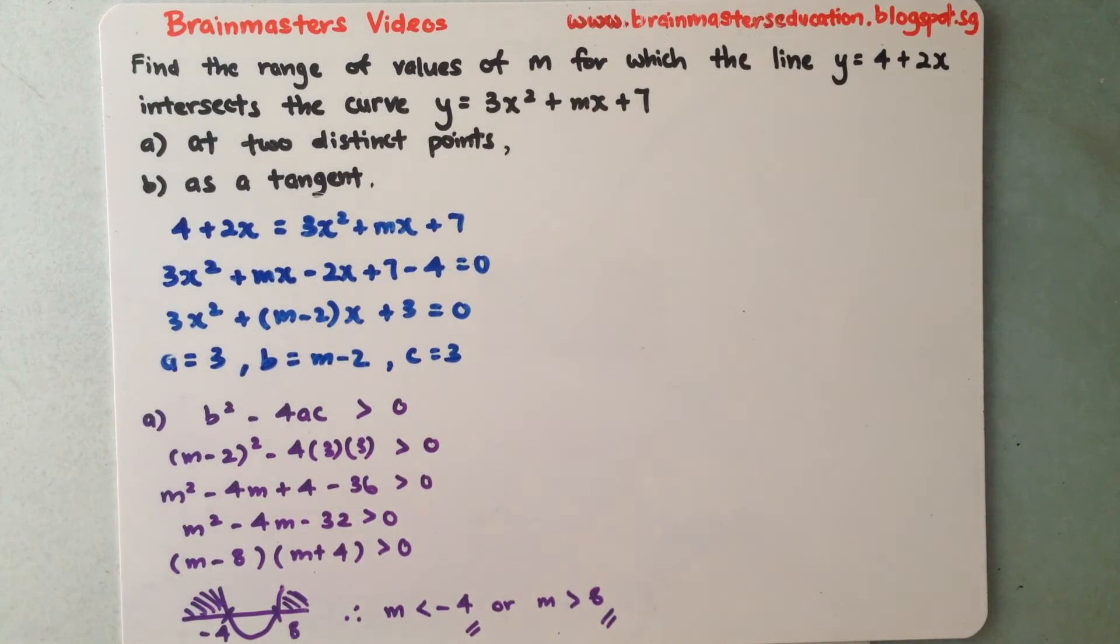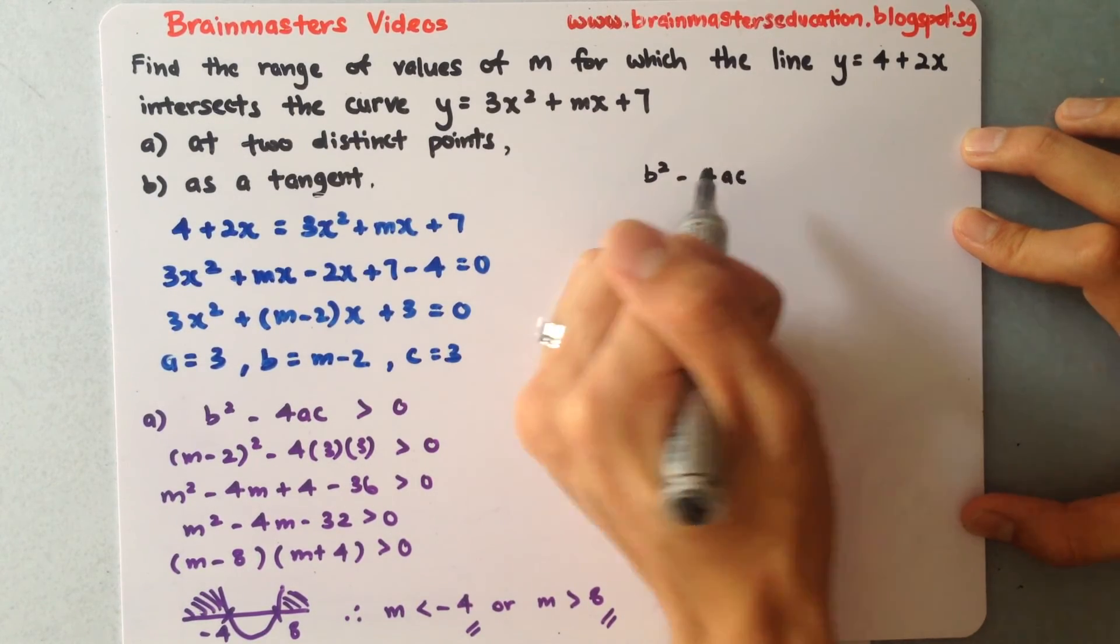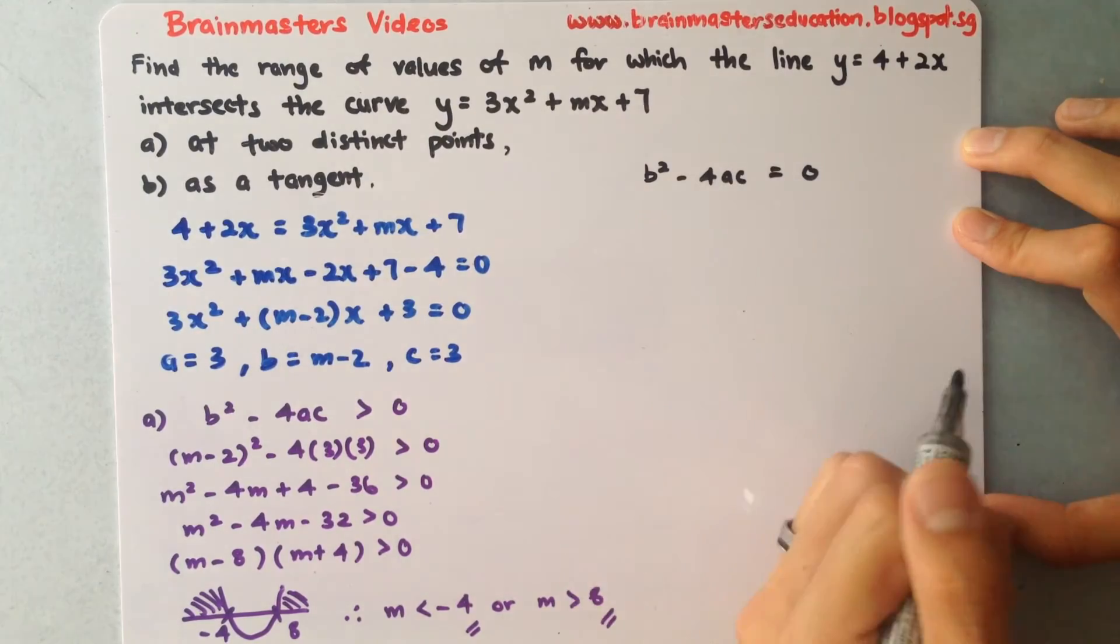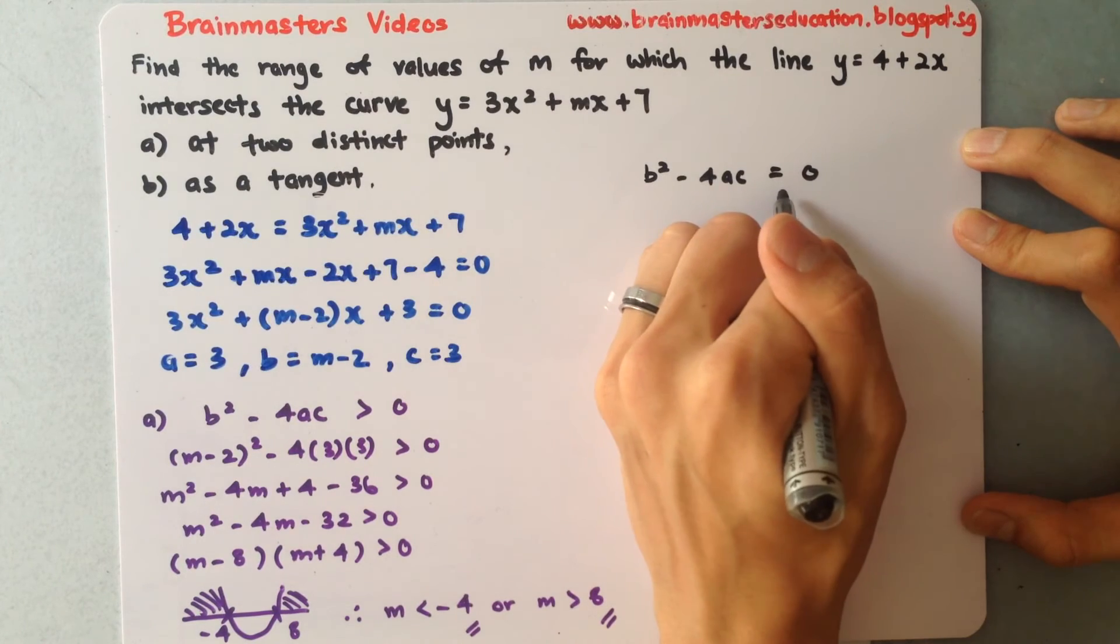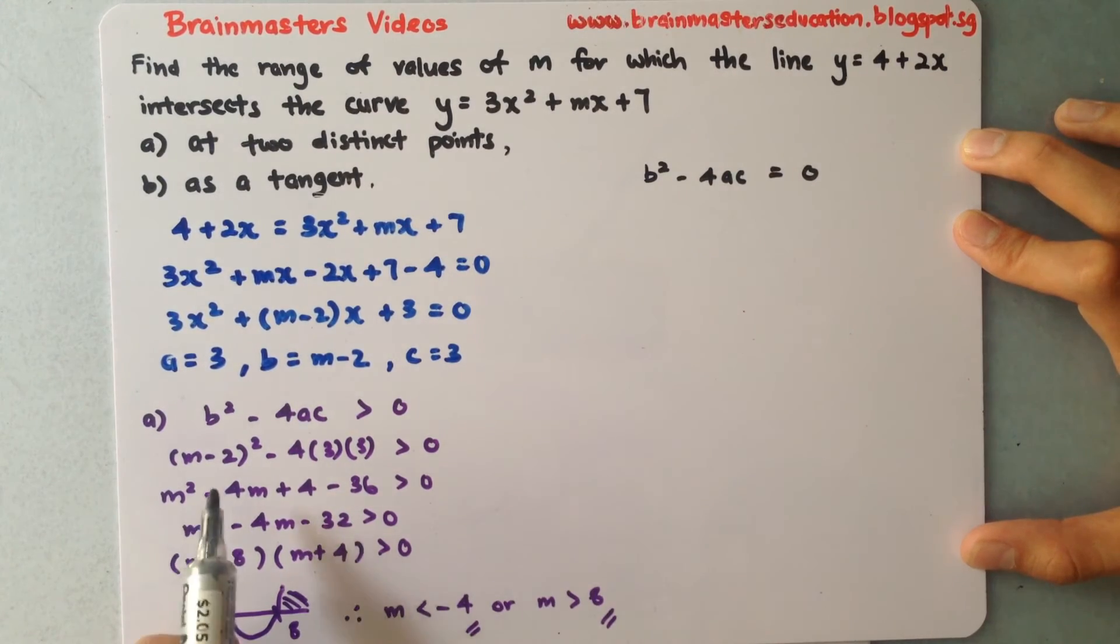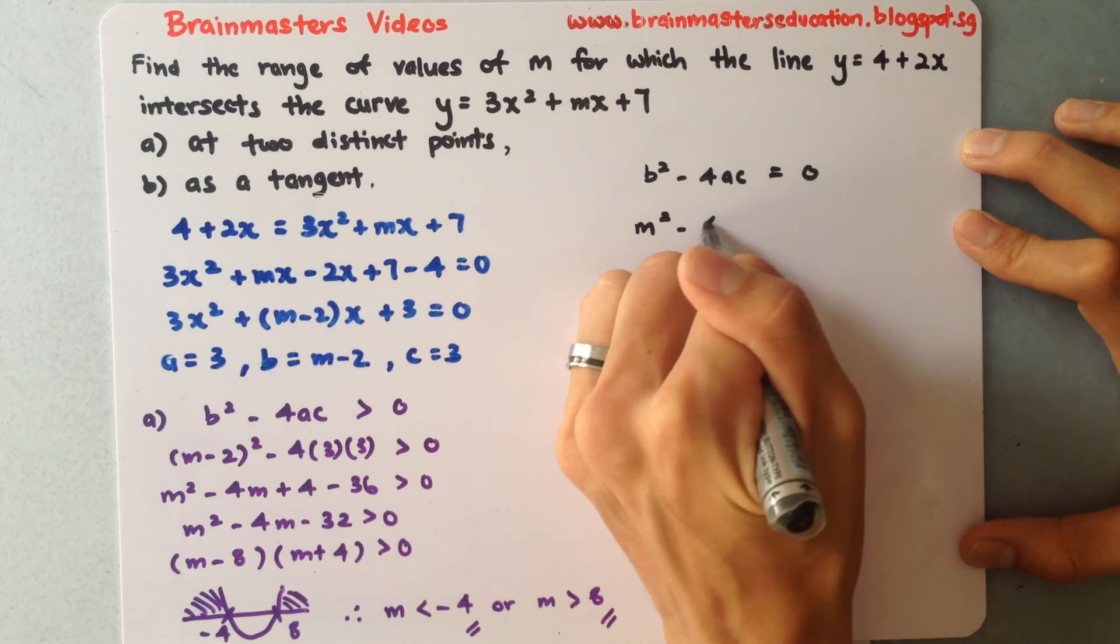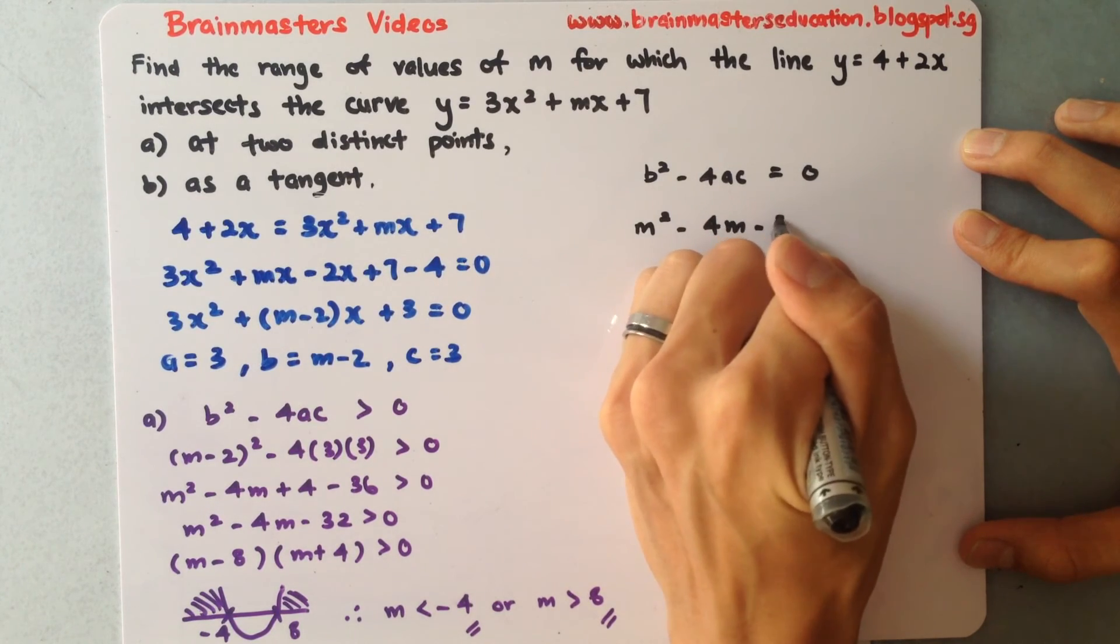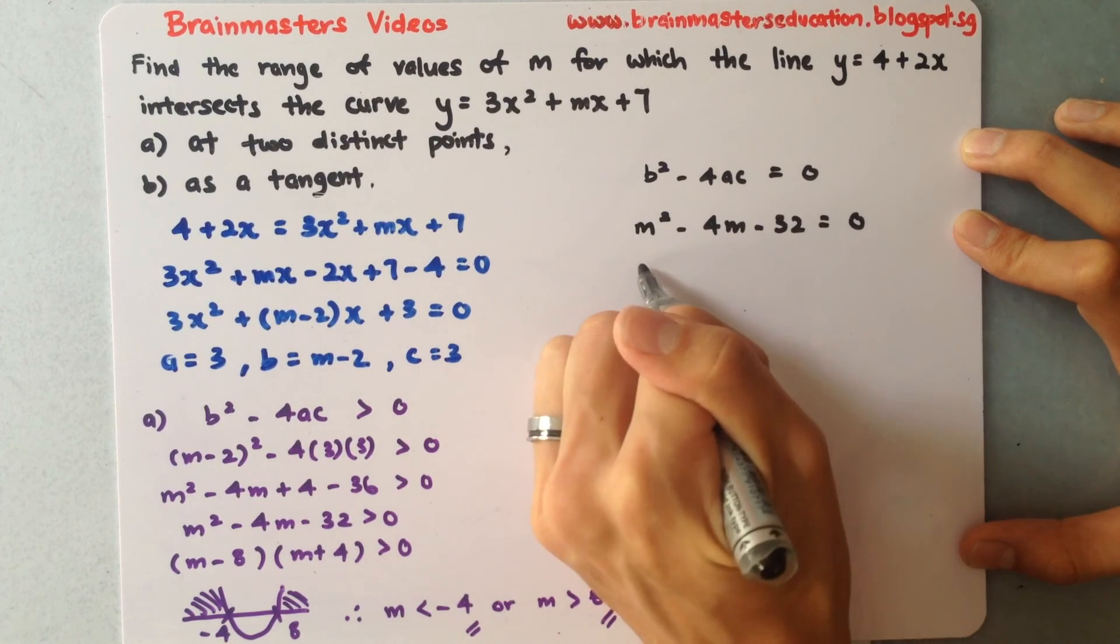For part b, as a tangent means b² - 4ac = 0. Substituting the same coefficients but setting it equal to 0: m² - 4m - 32 = 0. Factorizing: